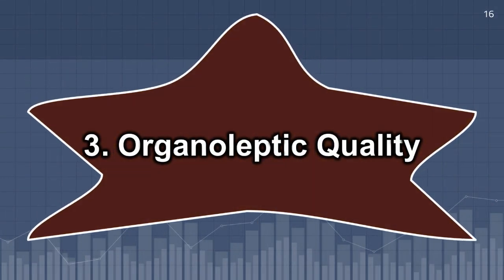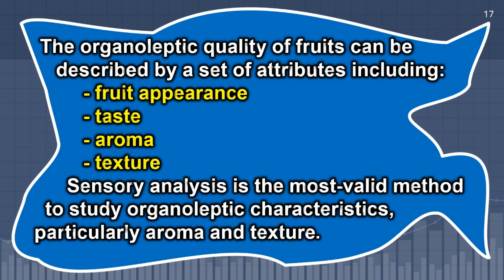Organoleptic quality: The organoleptic quality of fruits can be described by a set of attributes including fruit appearance, taste, aroma, and texture. Sensory analysis is the most valid method to study organoleptic characteristics, particularly aroma and texture.